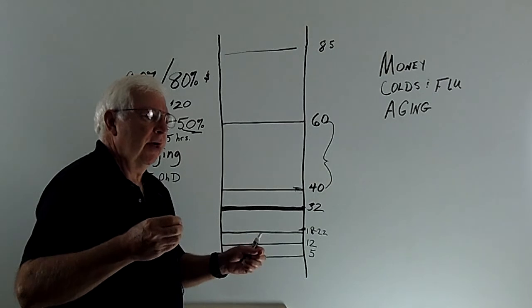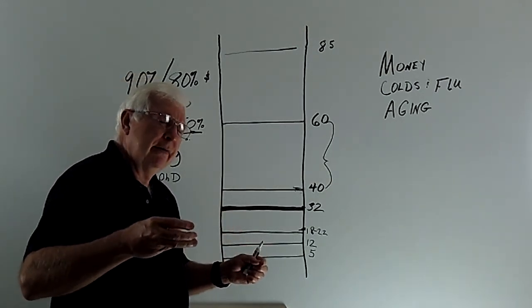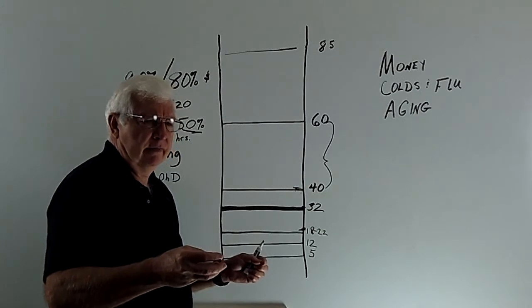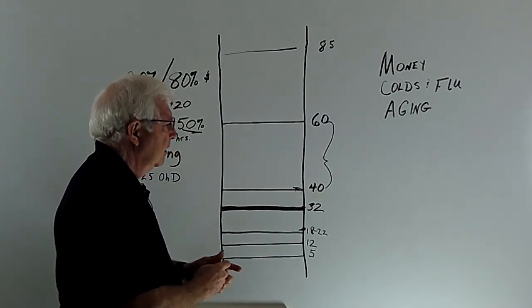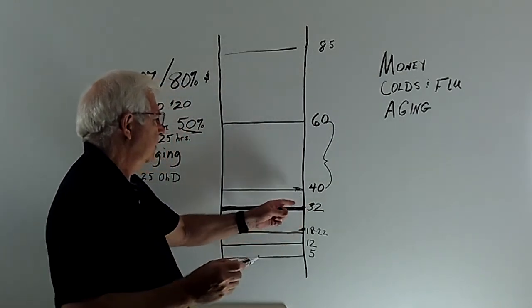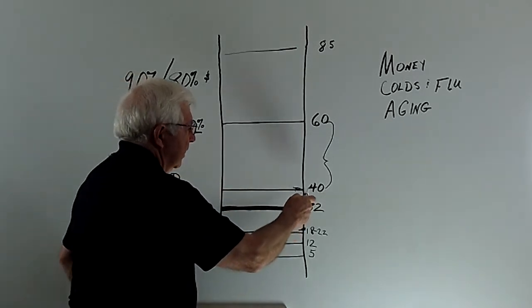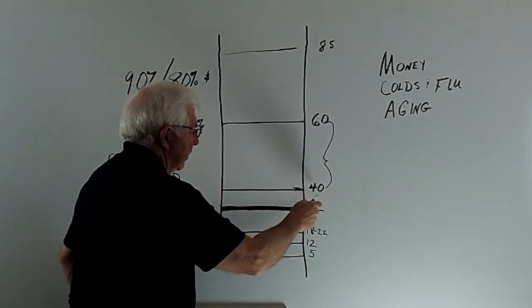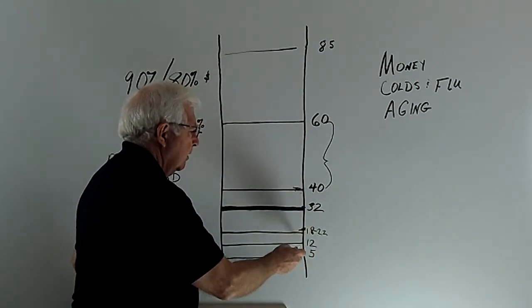Now, when the body contracts a cold, it loses about 50% of its ascorbate during the first 48 hours. So let's say if the ascorbate and the D3, because those are the things that work hand in glove, that would then would have dropped her level down here to about 20, and colds occur between 18 and 22.